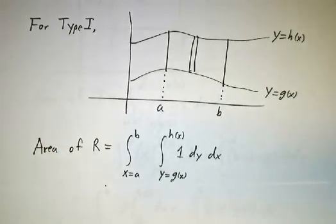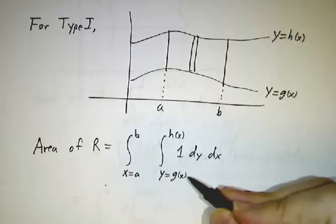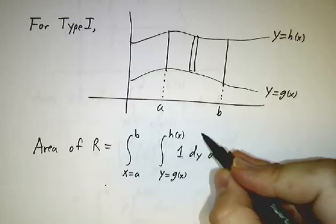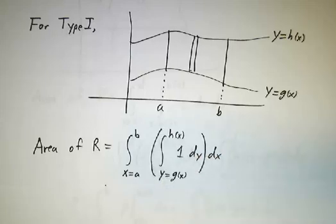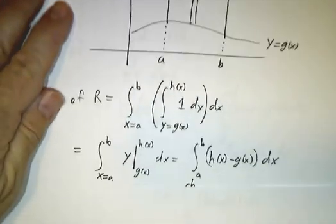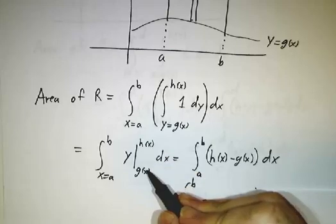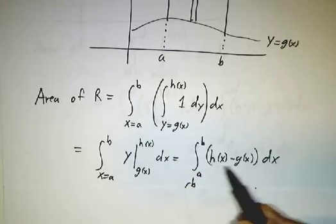So the area of our region is the integral from a to b, the integral from g(x) to h(x) of 1 dy dx. Now 1 is a pretty easy function to integrate. The integral of 1 dy is just y. So we evaluate y at h(x) and g(x), and we get h(x) minus g(x).